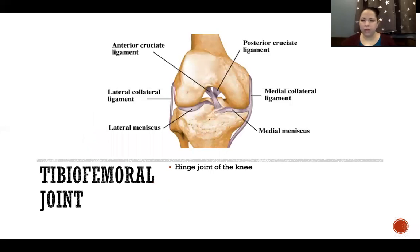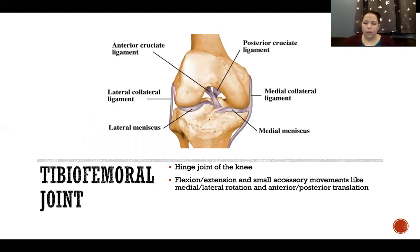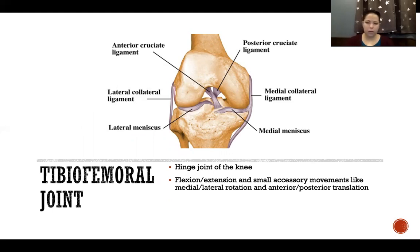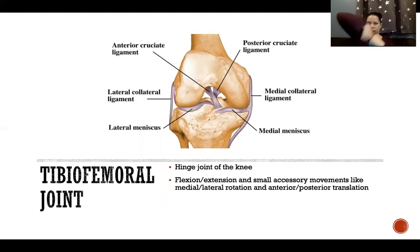The tibiofemoral joint is the hinge joint of the knee, responsible for flexion and extension. It also has small accessory movements, like a little bit of medial and lateral rotation and anterior and posterior translation. Those are arthrokinematic movements — looking at movements at the small level between bones in the joint, rather than orthokinematic movements where the whole bones move.